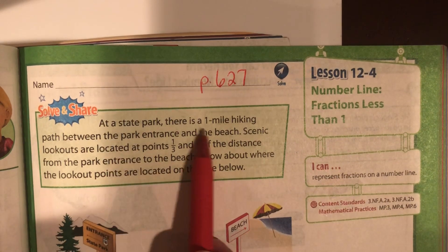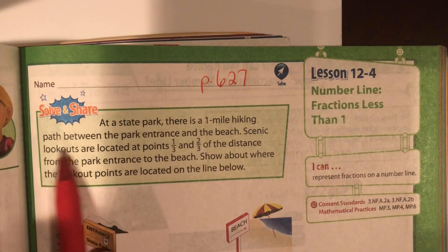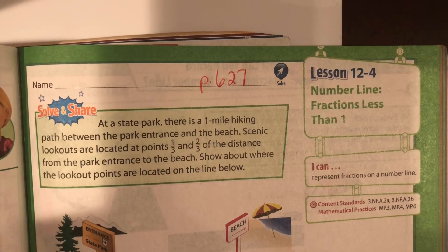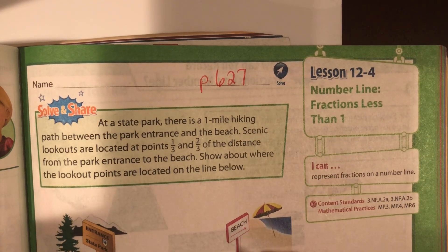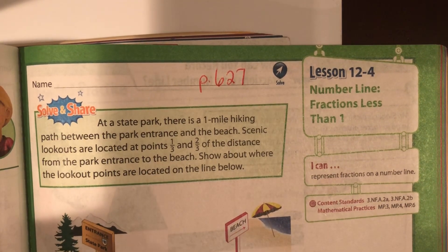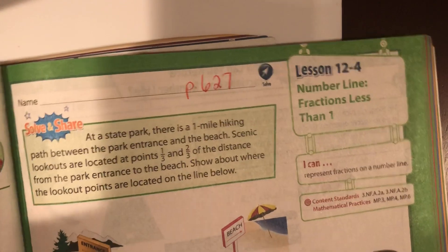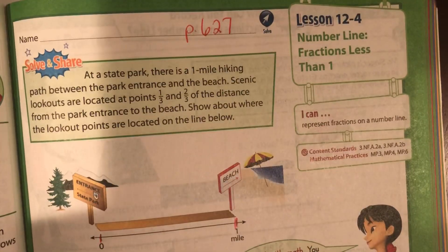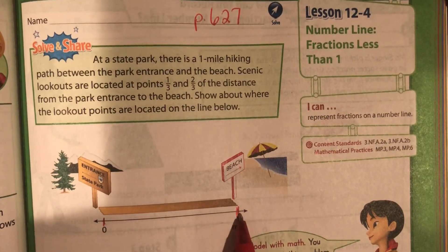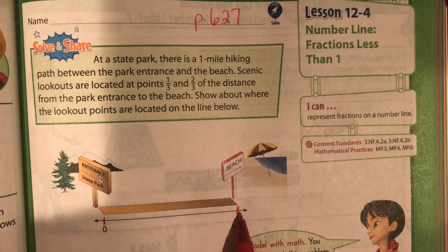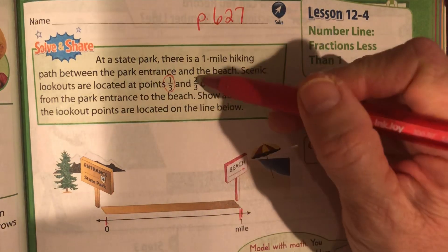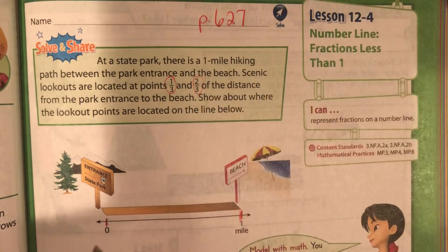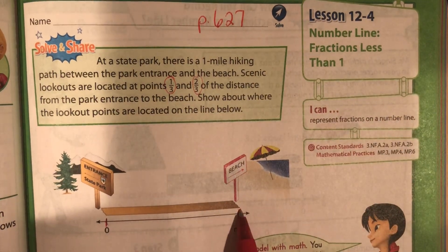At the state park, there is a one-mile hiking path between the park entrance, which is right here, and the beach, which ends right here. It's one mile from here to here. Scenic lookouts are located at points one-third and two-thirds of the distance from the park entrance to the beach.